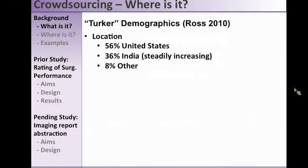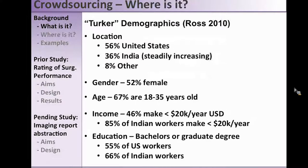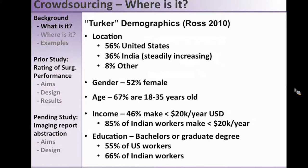Ross in 2010 studied the demographics of Amazon Turkers. A little over half are in the United States, with India steadily increasing — around 36% from India in 2010, 8% from other countries. It's roughly a 50/50 split between females and males. Most are in the young adult age group. In the US, about half made less than $20,000 a year; 85% of Indian workers also made under $20,000. But these people are actually pretty smart — 55% of US workers had a bachelor's degree or higher, and 66% of Indian workers did.